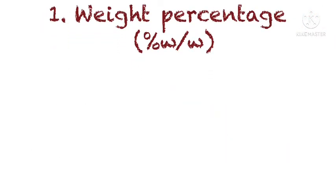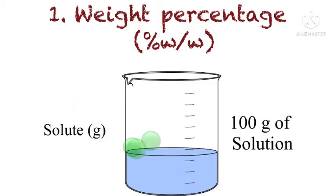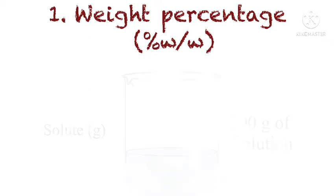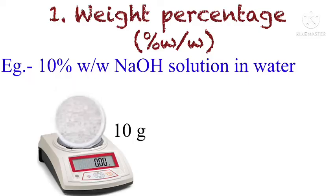The first type is weight percentage, represented by percent weight by weight (% w/w). It is the amount of solute in grams which is present in 100 grams of solution. Here, both the solute and the solvent are measured in grams.